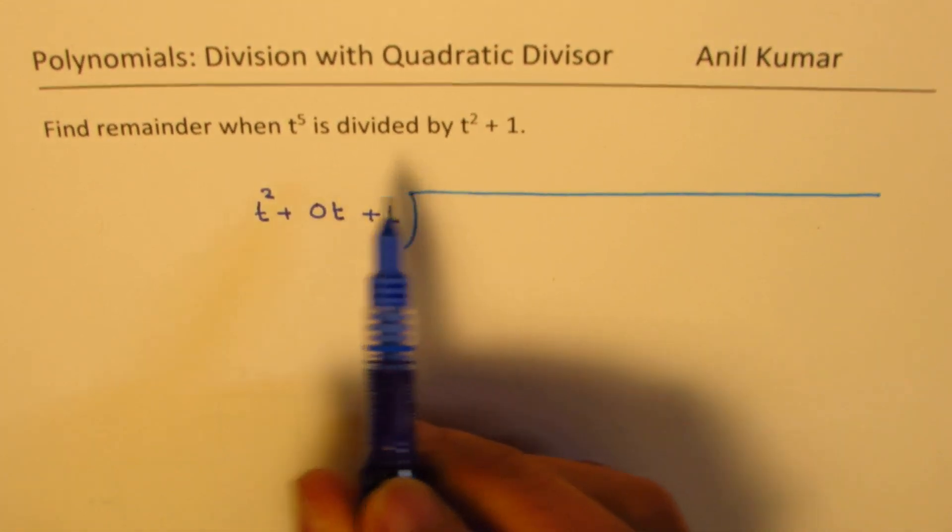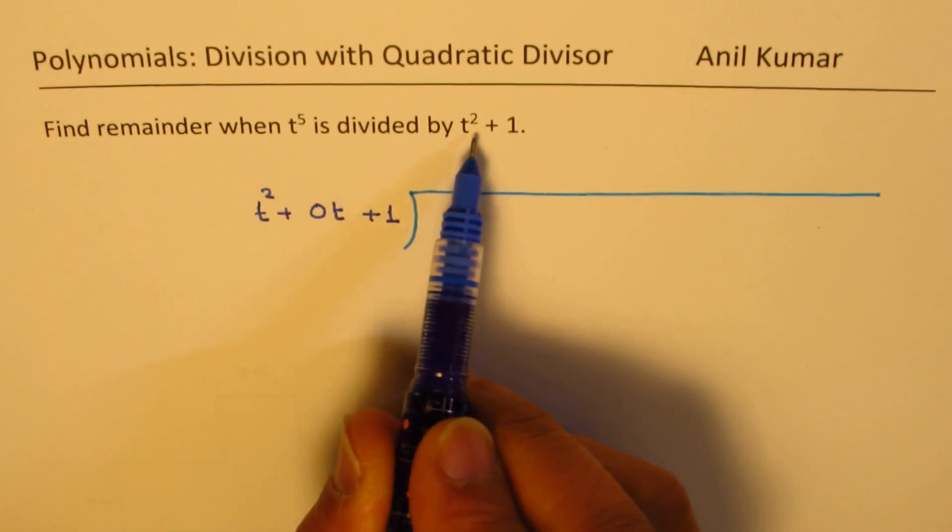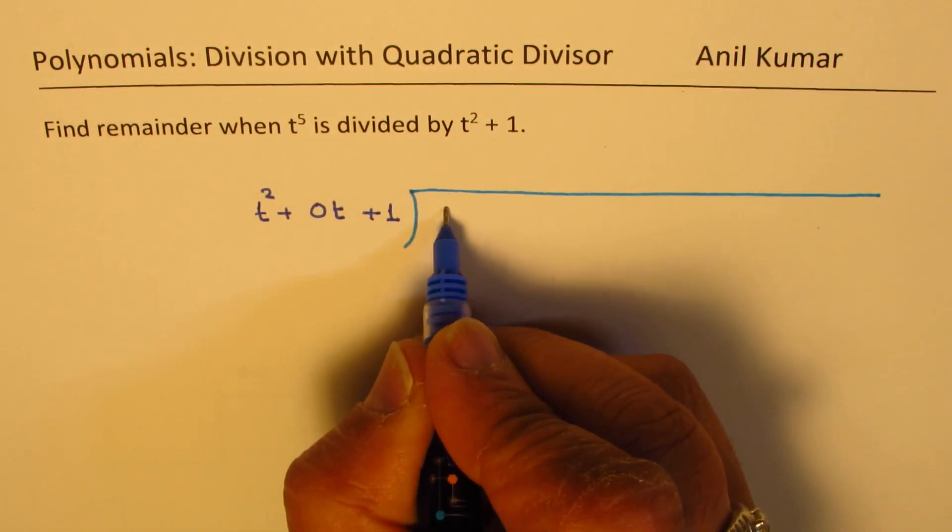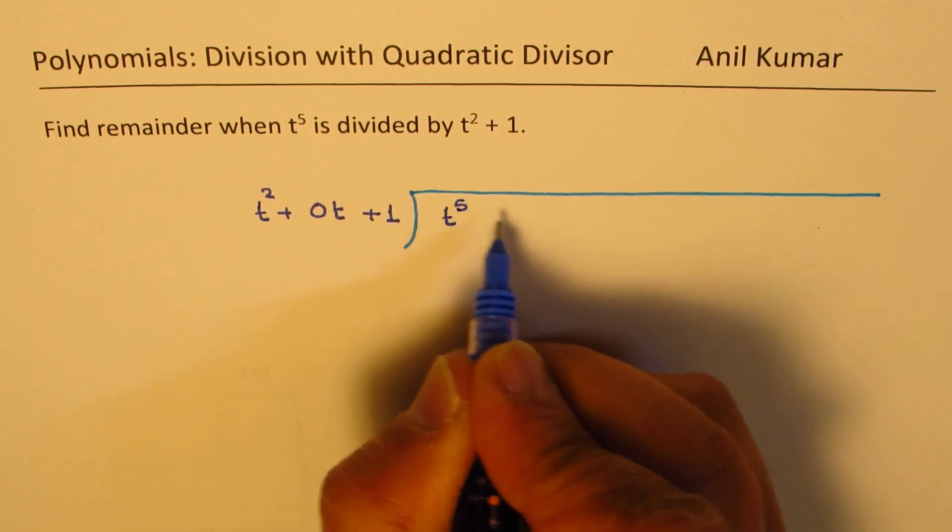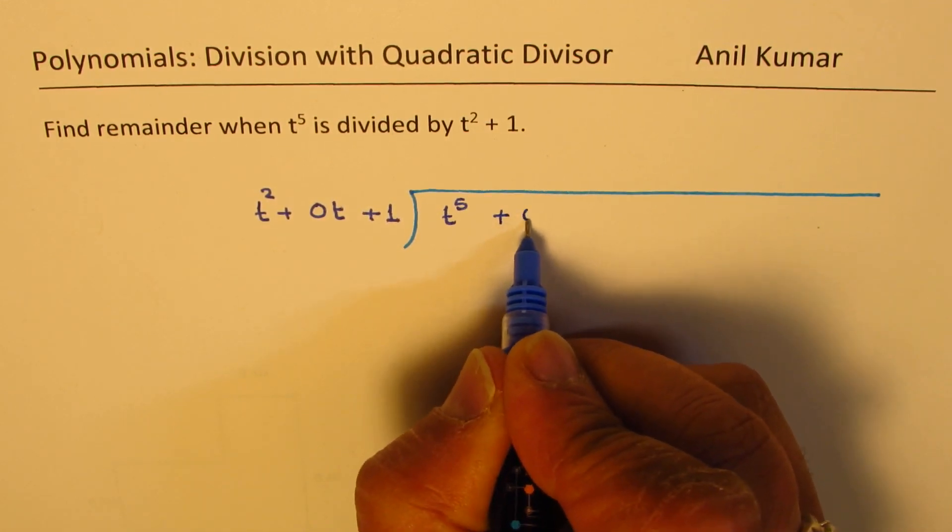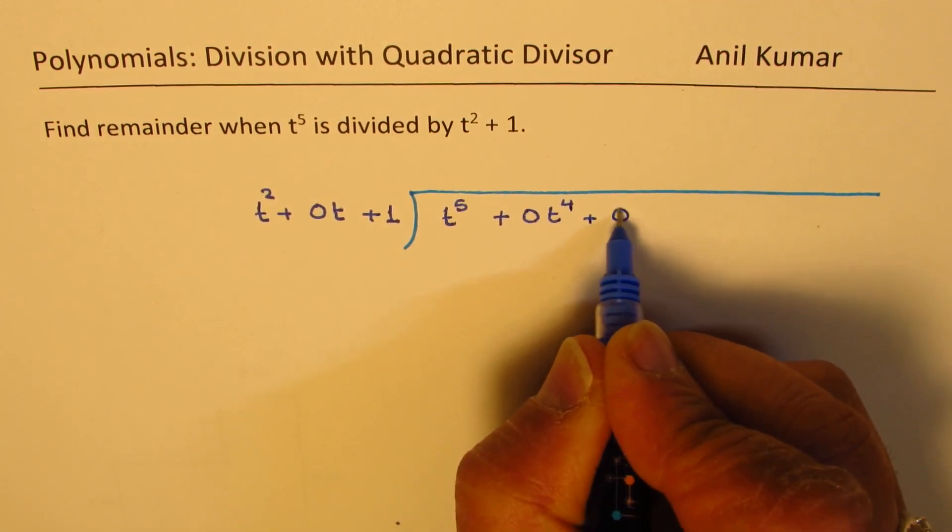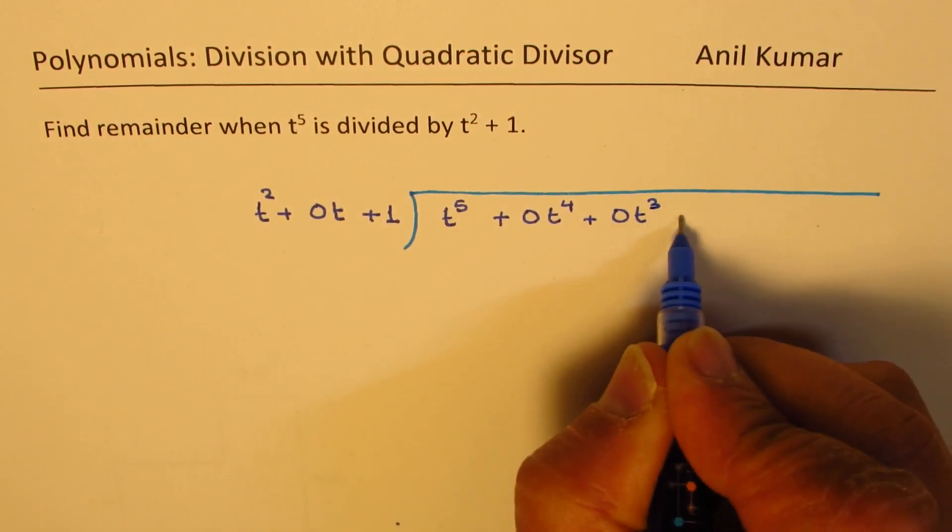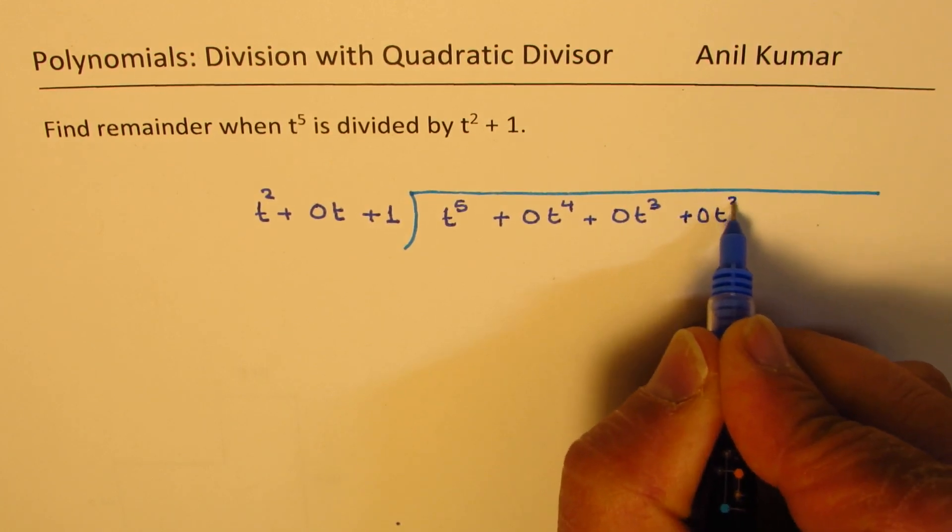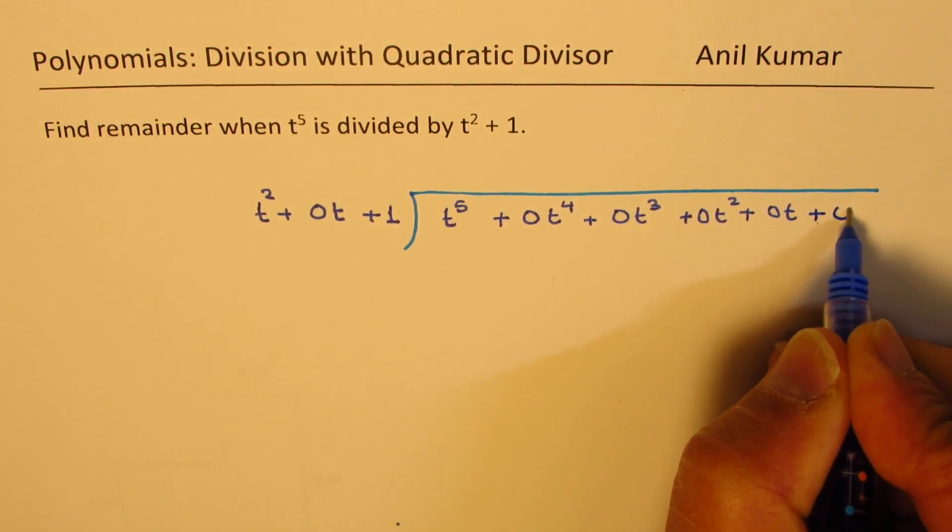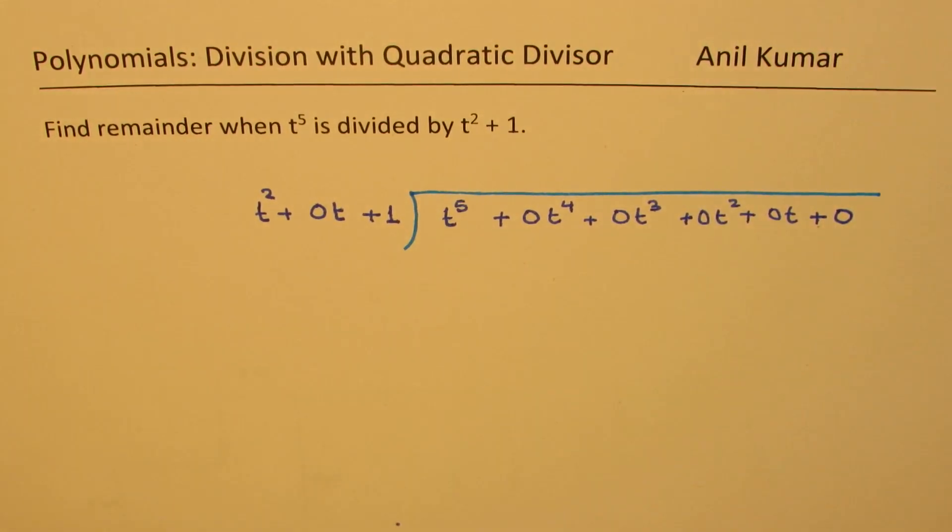Similarly, we are dividing. This is a divisor and we are dividing the function t to the power of 5. So t to the power of 5 will now be written as 0t to the power of 4 plus 0t cube plus 0t square plus 0t plus 0, right? So that is t to the power of 5.